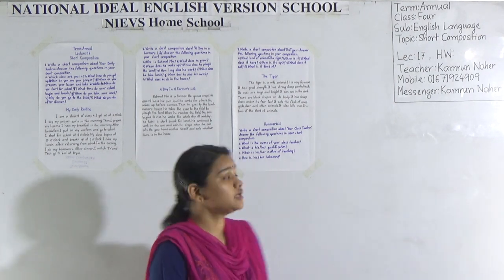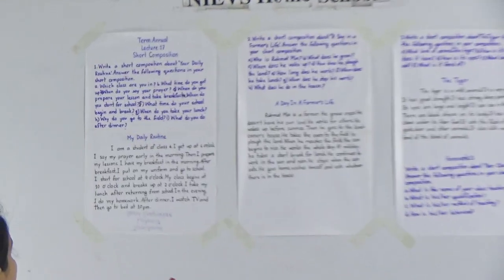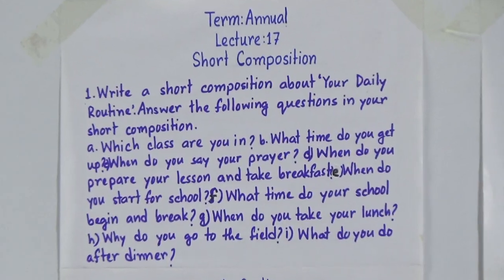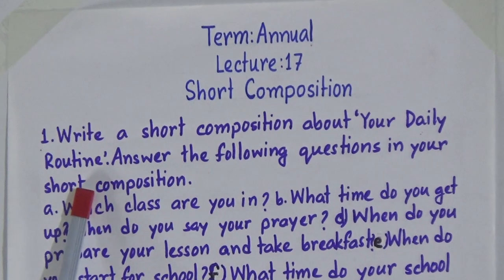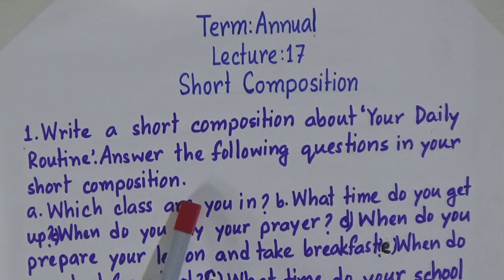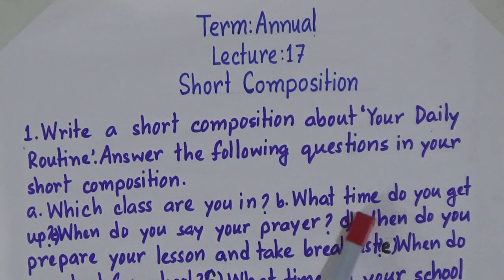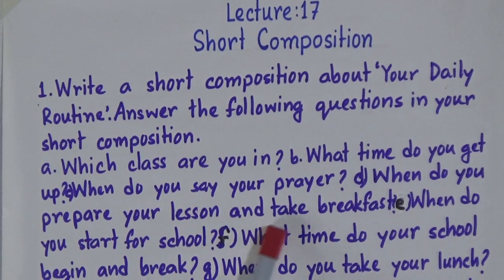For short composition, you will be given some questions and you need to write your composition on the basis of those questions. Now look, the first one: write a short composition about your daily routine. You will write a composition about your daily routine and answer the following questions: which class are you in, what time do you get up, when do you say your prayer, when do you prepare your lesson and take breakfast.